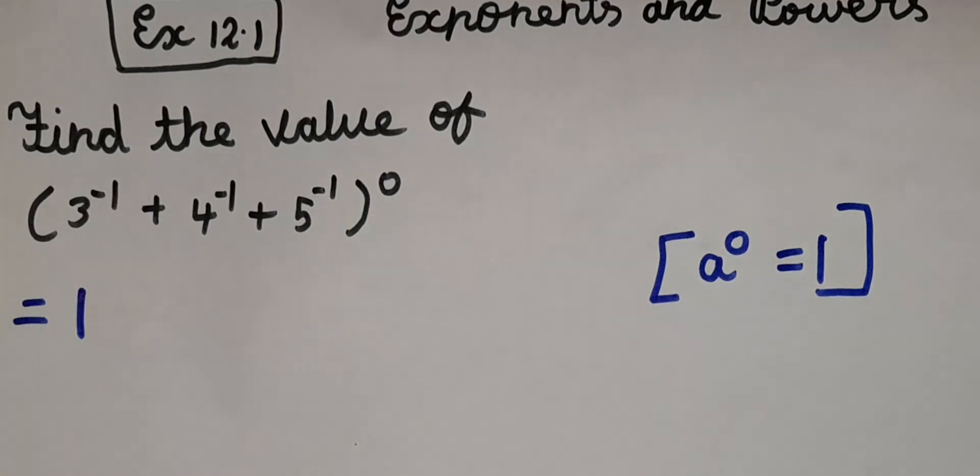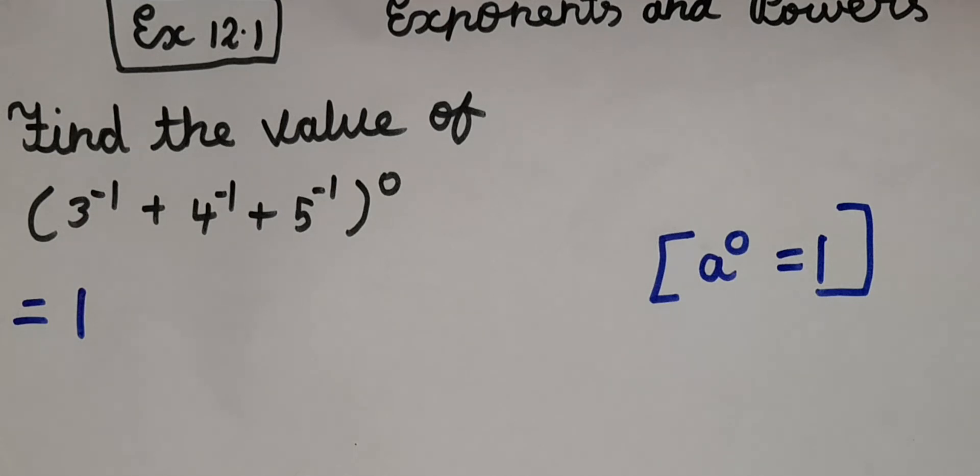So if I have 3 power 0, I can write it as 1. When we have the whole power 0 or power as 0, we can write it as 1. So our answer is 1.